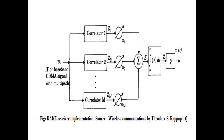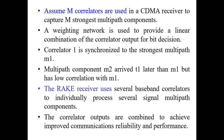The main part of the RAKE receiver is that it combines all these signals of small duration — the chip period duration is something like 800 nanoseconds. Assuming we have M correlators in the receiver, a weighting network is provided to make things in a linear combination and to take a decision based on a threshold. Correlator one is synchronized to the strongest multipath, then the second multipath component M2 has a slight delay of around 700 to 800 nanoseconds compared to M1. The RAKE receiver uses several baseband correlators to individually process all these, and all correlators are finally combined.